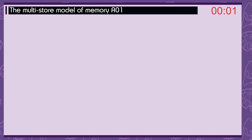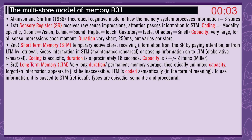The multi-store model of memory. Atkinson and Shiffrin in 1968. A theoretical cognitive model of how the memory system processes information. Three stores. First: the sensory register, which receives raw sense impressions. Attention passes information to short-term memory.